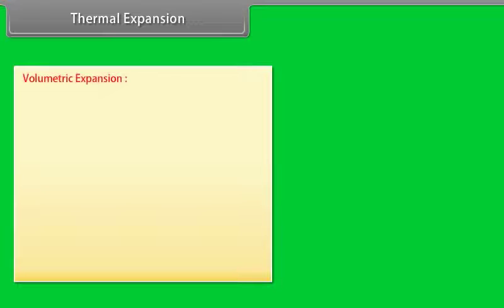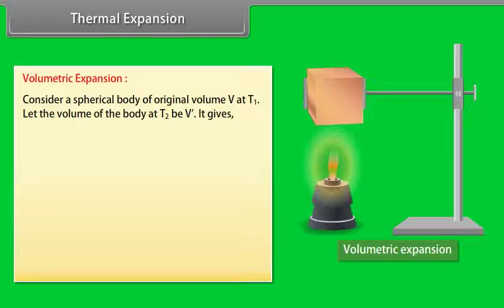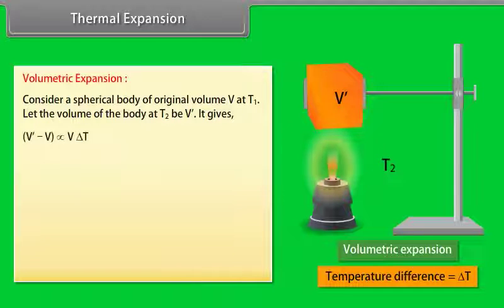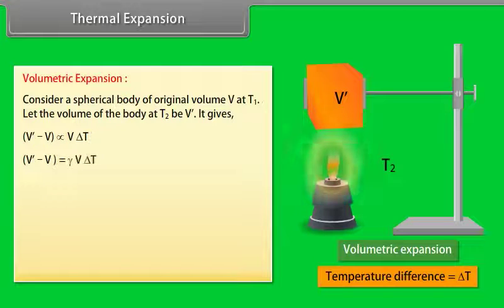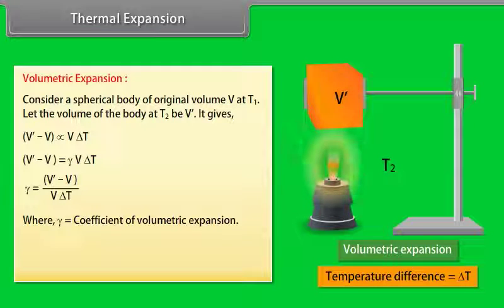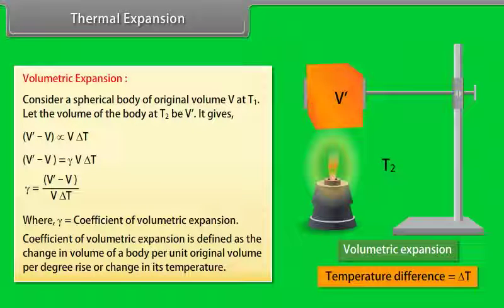Volumetric expansion: Consider a spherical body of original volume V at temperature T₁. Let the volume be V' at temperature T₂. Then V' − V = γVΔT, and the coefficient of volumetric expansion γ = (V' − V)/(VΔT). It is defined as the change in volume of a body per unit original volume per degree rise in temperature.